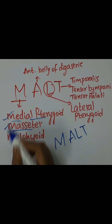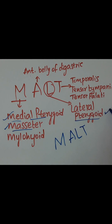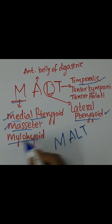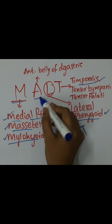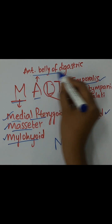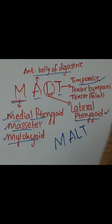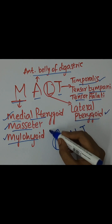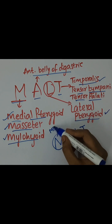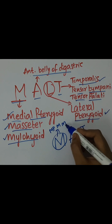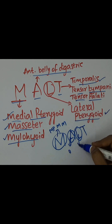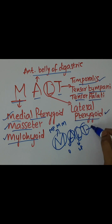Continuing with MALT: M — masseter, lateral pterygoid, temporalis, and mylohyoid; A — anterior belly of digastric; L — lateral pterygoid; T — temporalis, tensor tympani, and tensor veli palatini. So in total there are 8 muscles of the 1st pharyngeal arch.